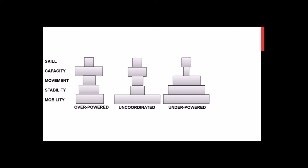The ideal outcome of the developmental period between roughly ages 11 and 16 is the 'underpowered' athlete — mobile, stable, moving well, but simply not having developed that strength and power capacity yet. That means they're in a perfect position to get in the gym and start serious strength training.